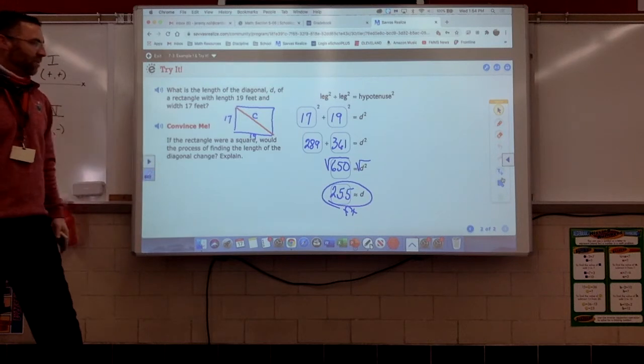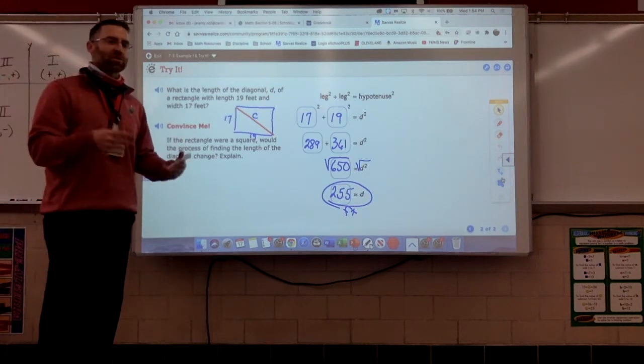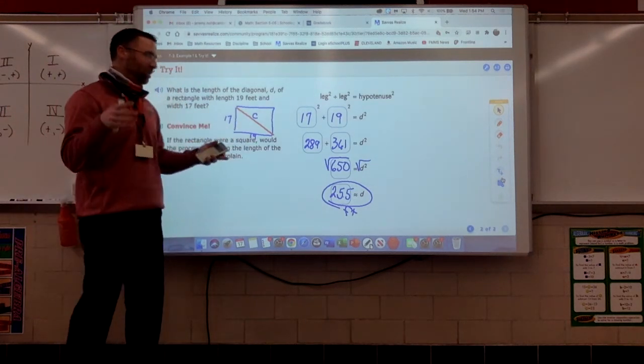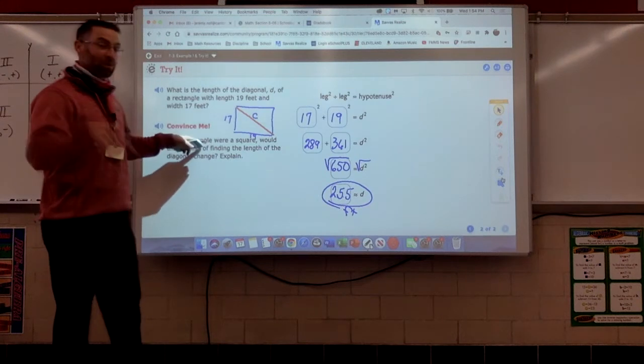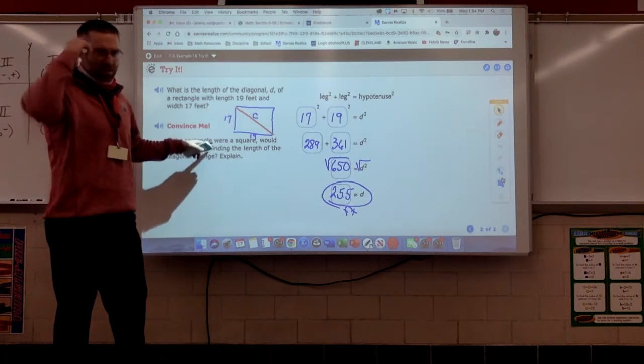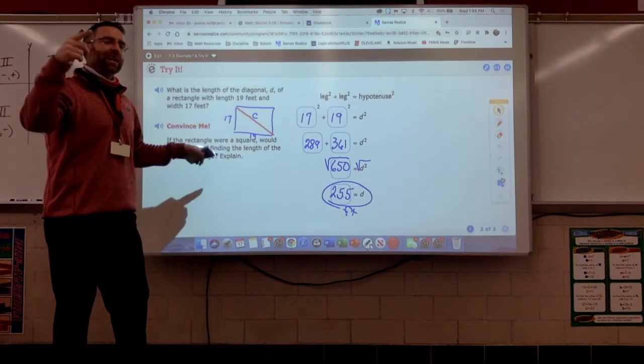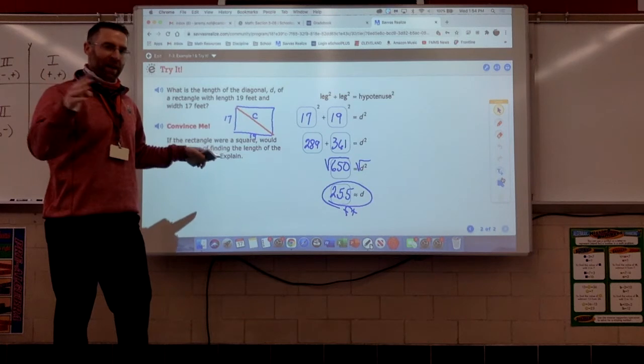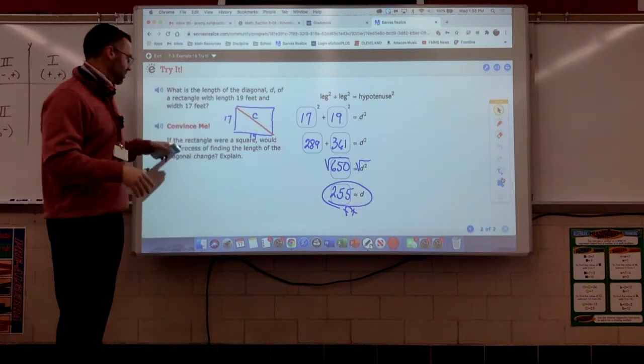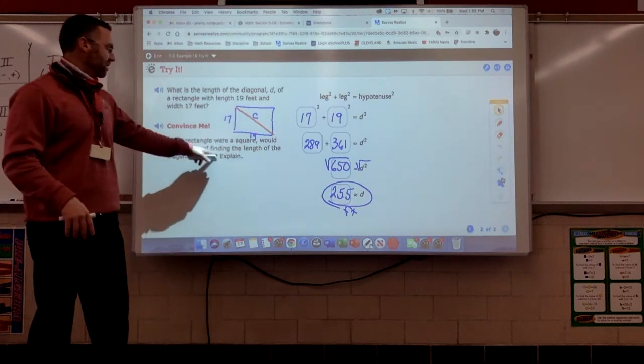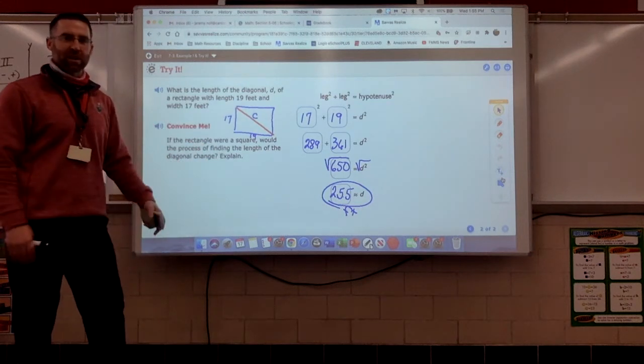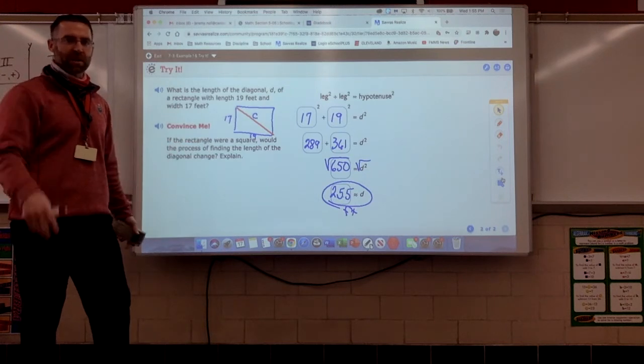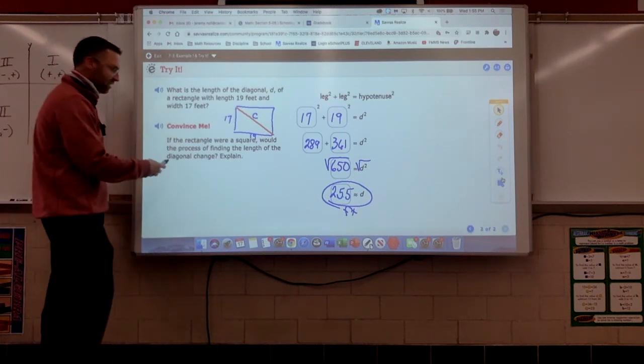This one here just says if the rectangle were a square. Now, remember, all squares are rectangles. Because, again, a rectangle is just the shape with 90 degree angles. Four 90 degree angles. So, a square is a rectangle. It's kind of confusing to think about. It's just a special rectangle that has four congruent sides. But they all have four 90 degree angles. So, if the rectangle were a square, would the process of finding the length of the diagonal change? No. Square the two legs. Add them together. Find the square root of that total. That's it.